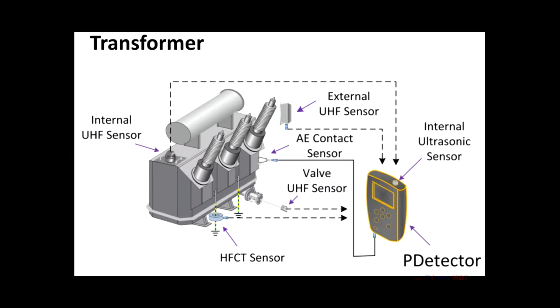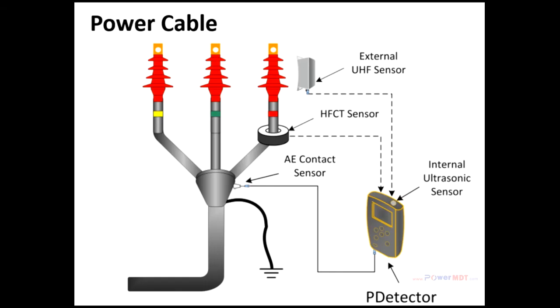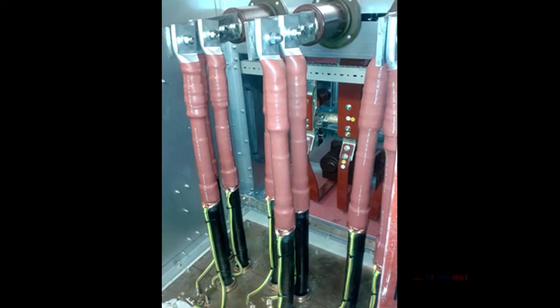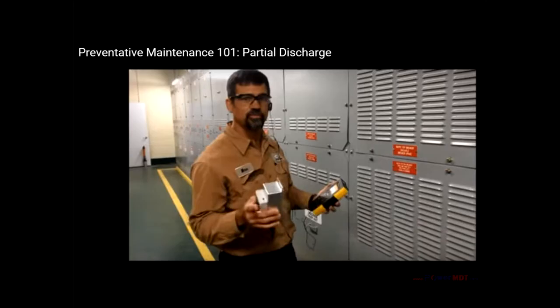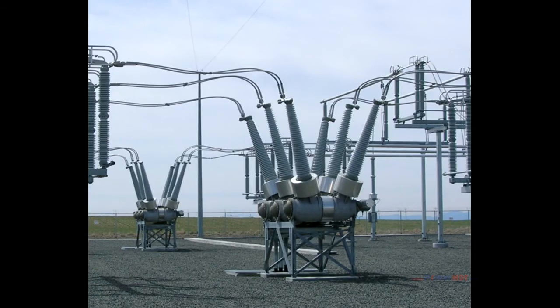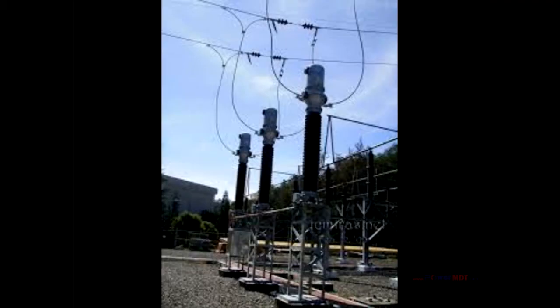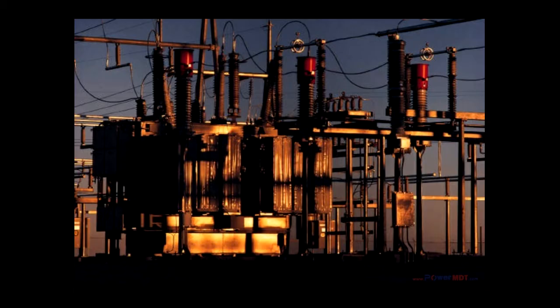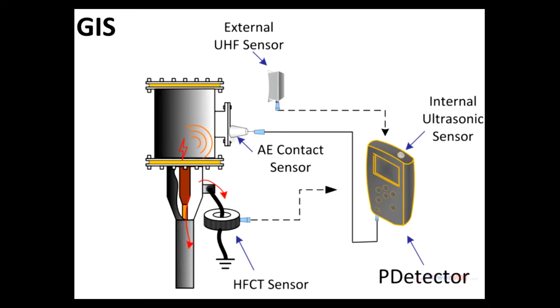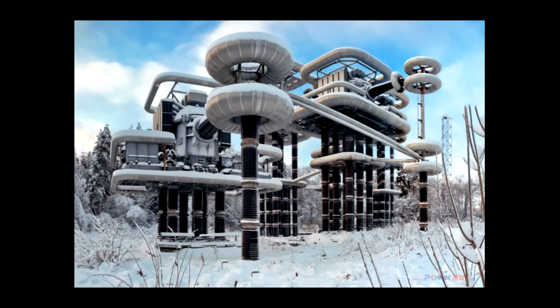In addition to power transformer diagnostics, the online PD detection kit can be applied to power cables and their terminations and splices, medium voltage switchgear, SF6 circuit breakers, GIS, instrument transformers, bushings, overhead insulators — virtually any type of substation apparatus energized above 3 kV.